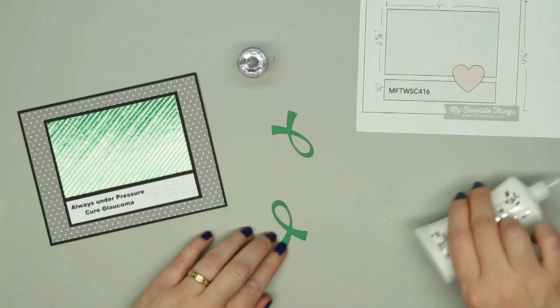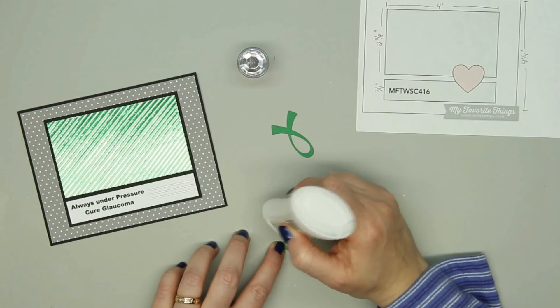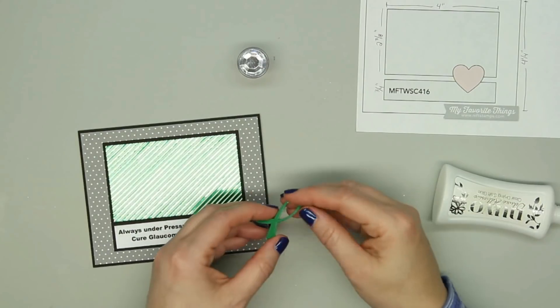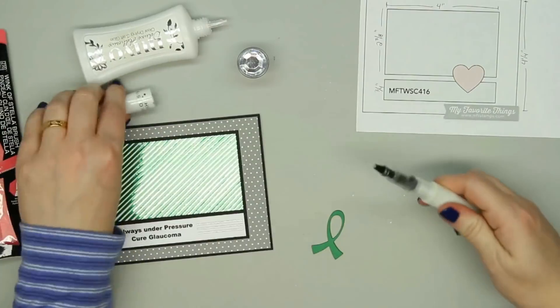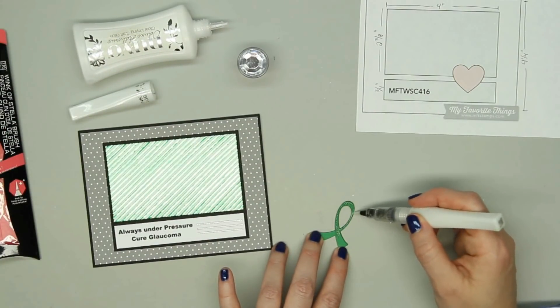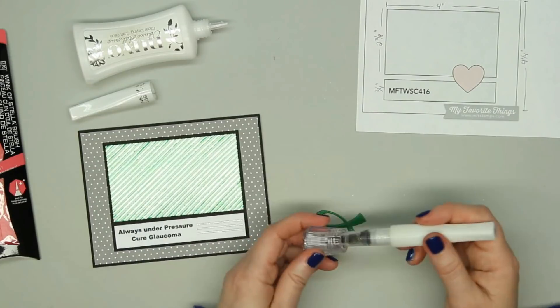I went ahead and cut out three of these ribbons in some green cardstock. I wanted to add a little bit of thickness so I'm gluing three of them all together, and then I just wanted to add a little bit of sparkle so I'm covering the whole thing with one of the clear Wink of Stella glitter pens.